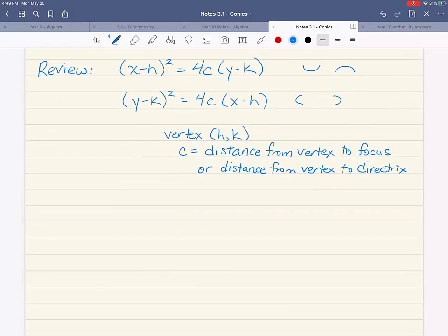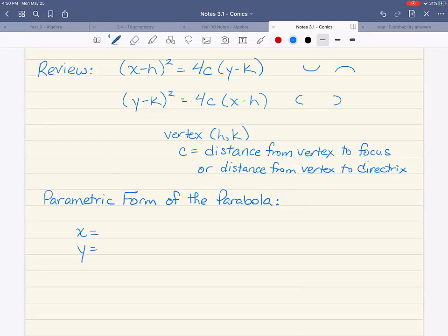So let's start by discussing the parametric form of the parabola. Remember that parametric equations come in pairs. The first pair is x equals and y equals, of course. They both start with h and k. x equals h, y equals k plus.